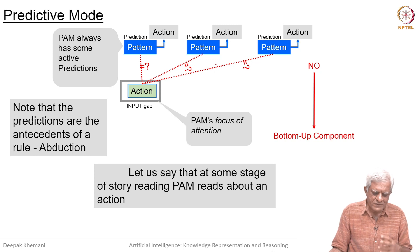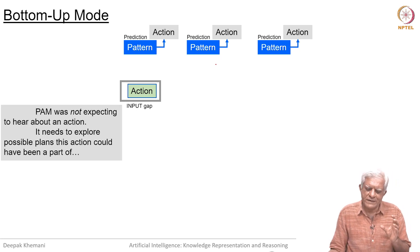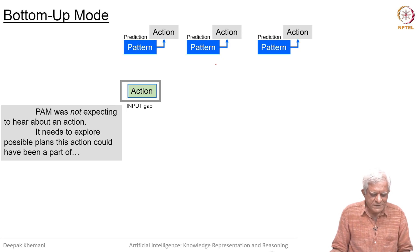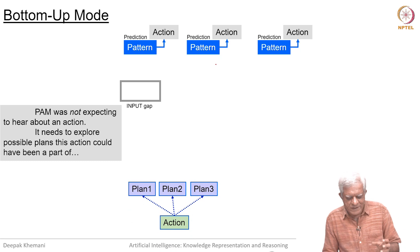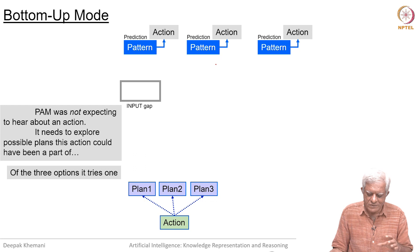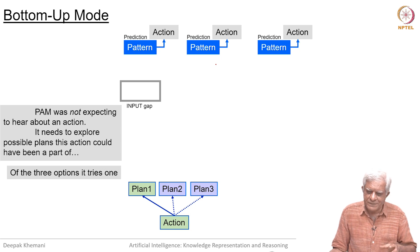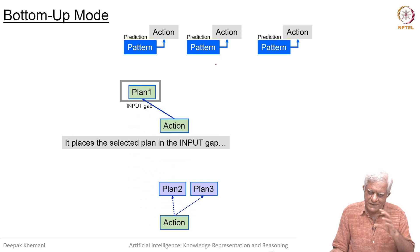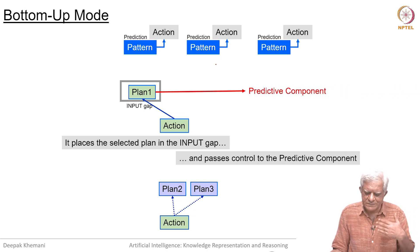Note that the predictions are the antecedents of the rules — these are pattern-action rules and PAM is expecting to see those patterns. PAM was not expecting to hear about an action, so it needs to explore possible plans this action could have been part of. It goes into the bottom-up mode and tries to see what possible plans this action could have been part of. Let us say there are three plans and it will try them one by one. Now it places the selected plan into the input gap and hands control over to the predictive component, which will match them one by one as it did with the action that it first saw.